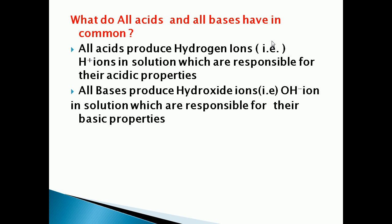All acids produce hydrogen ions - H+ ions in solution. These H+ ions are responsible for their acidic property. All acids produce hydrogen ions in solution which are responsible for their acidic property, and bases produce hydroxide ions in solution which are responsible for their basic property.